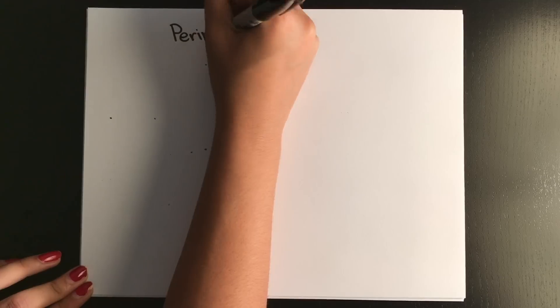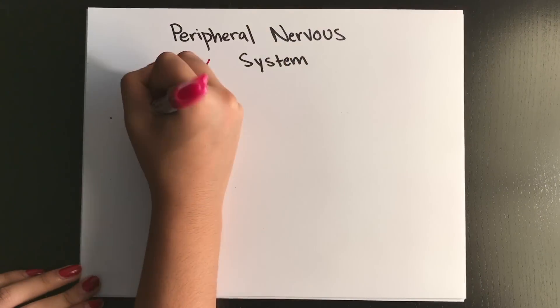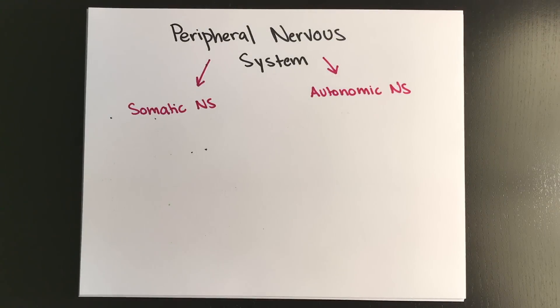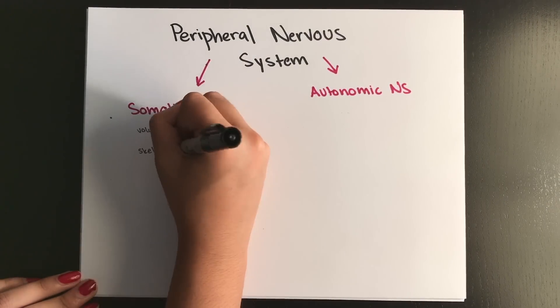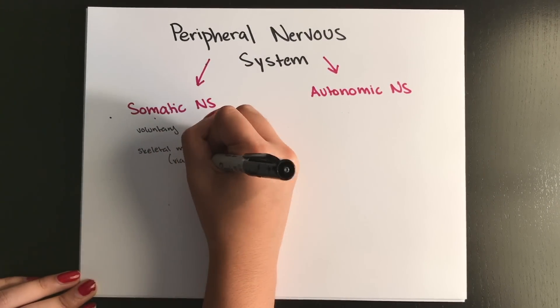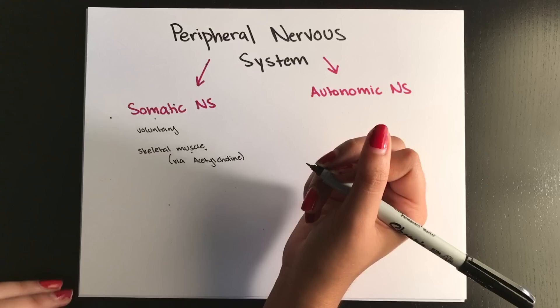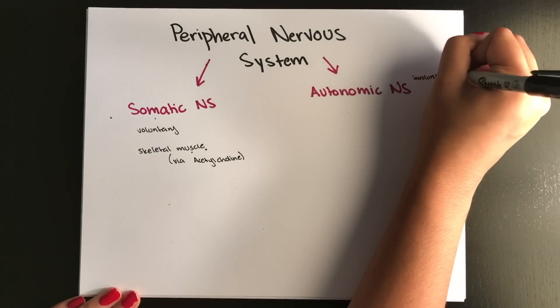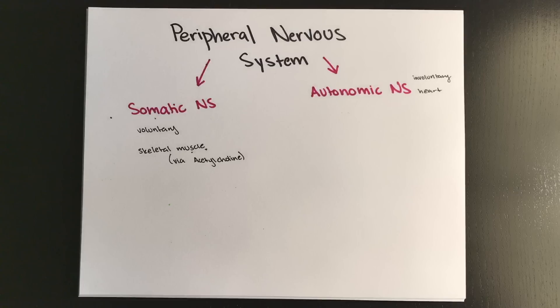Now we're going to divide the PNS, which is made up of the somatic nervous system and the autonomic. The somatic is voluntary, and whenever you think somatic, think skeletal muscles only, the S and the S. This nervous system uses acetylcholine to stimulate skeletal muscle. Now the ANS is involuntary, and it includes organs like the heart.